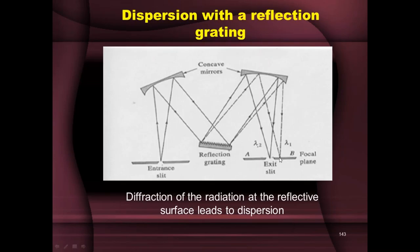If you want lambda 1 to fall on the sample, you rotate the grating. When the grating is rotated, lambda 2 shifts to one side of the focal plane and lambda 1 shifts right onto the exit slit. So, just as the prism was rotated, here the grating is rotated to get different wavelengths onto the exit slit. Diffraction of radiation at the reflected surface leads to dispersion in the case of gratings.